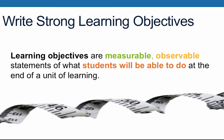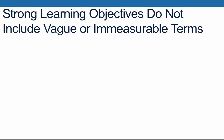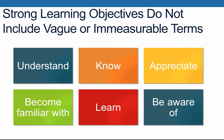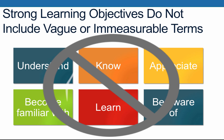Now that we've learned how to use Bloom's Taxonomy to help write learning objectives, as you work through developing a course design matrix for your course, you should strive to write strong learning objectives. Learning objectives are measurable, observable statements of what students will be able to do at the end of a unit of learning. Strong learning objectives do not include vague or immeasurable terms. Terms like 'understand,' 'know,' 'appreciate,' 'become familiar with,' 'learn,' and 'be aware of' are much too vague and almost impossible to assess. Use the Bloom's Wheel provided to help you select strong action verbs that describe exactly what the learner will do, ensuring that you are writing specific, measurable, and observable objectives that will provide a solid foundation for your course design. This concludes this video. Thanks for watching. We'll see you next time.